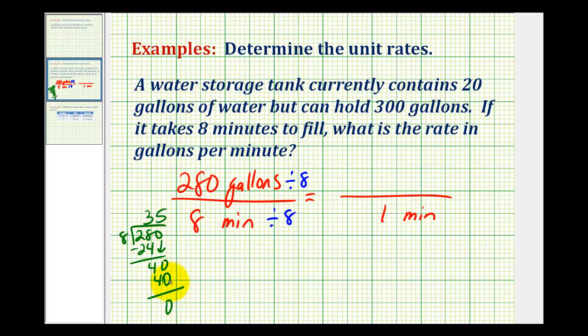So this tells us the fill rate in gallons per minute would be 35 gallons per one minute. We could also write this in the way that is worded, 35 gallons per minute.